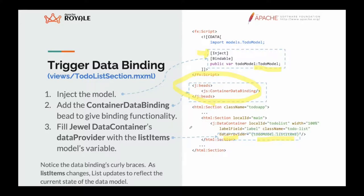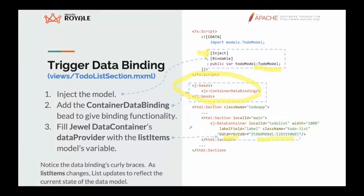One important thing in Royale is to add the ContainerDataBinding bead, because in Royale data binding functionality is not baked into all components — we need to add this functionality to the component to make it able to use data binding. This is important because it's one of the things promoted in Royale: we want the framework to be performant and quick, so we don't add functionality we don't need all the time. This is the 'pay as you go' concept.